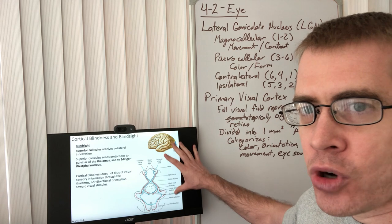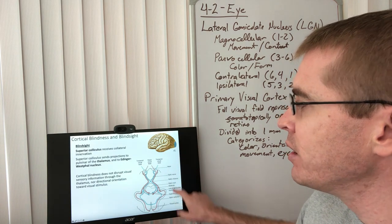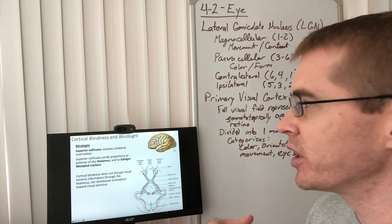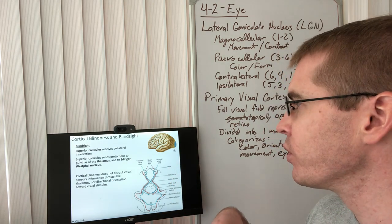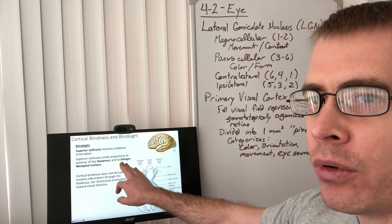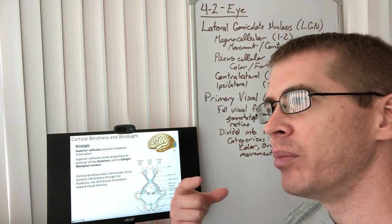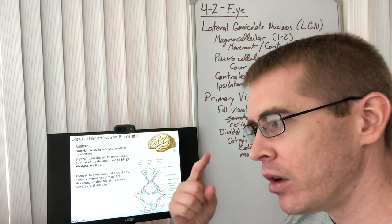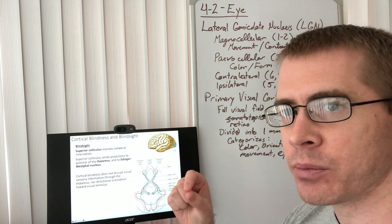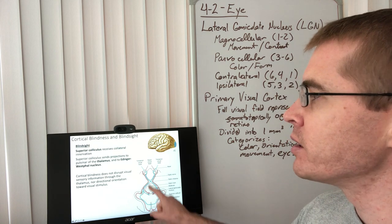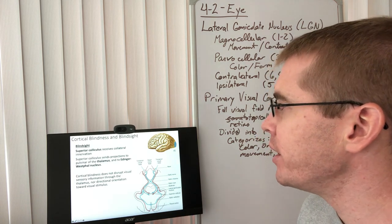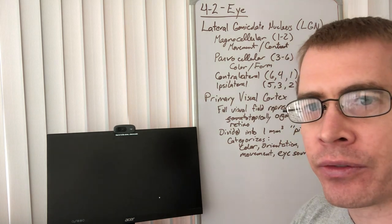We can see the description of cortical blindness again here — the pathways where there are collaterals before getting to the LGN, collaterals to the superior colliculus projecting information to the thalamus and ultimately to the cortex. Because of this branching, cortically blind people will also exhibit the ability to accommodate — focus on an object in their visual field — and their pupils will dilate and contract in response to light, because those are automatic and autonomic processes that occur before visual processing takes place. Those are some interesting clinical tidbits, and that's all for this lecture.